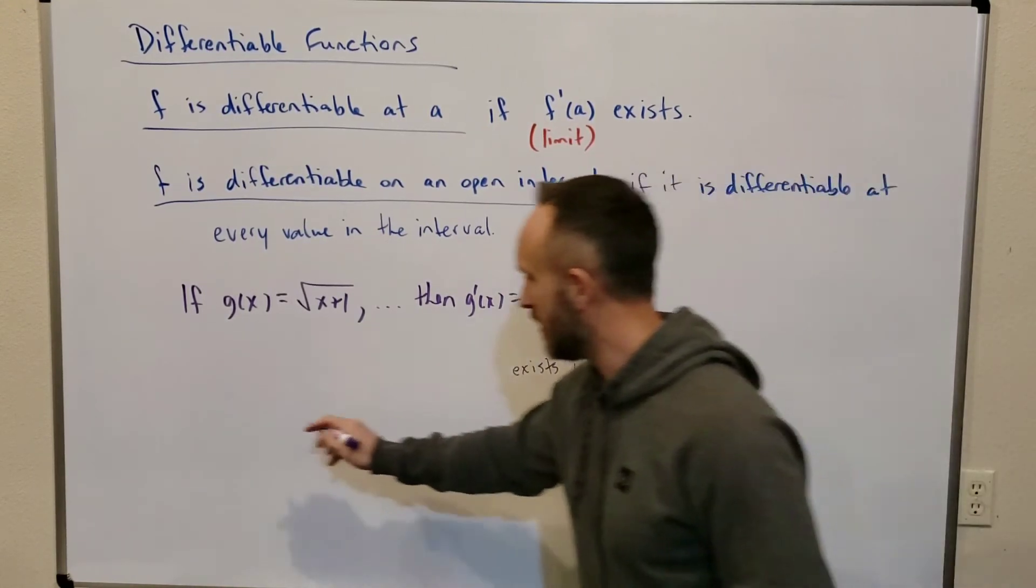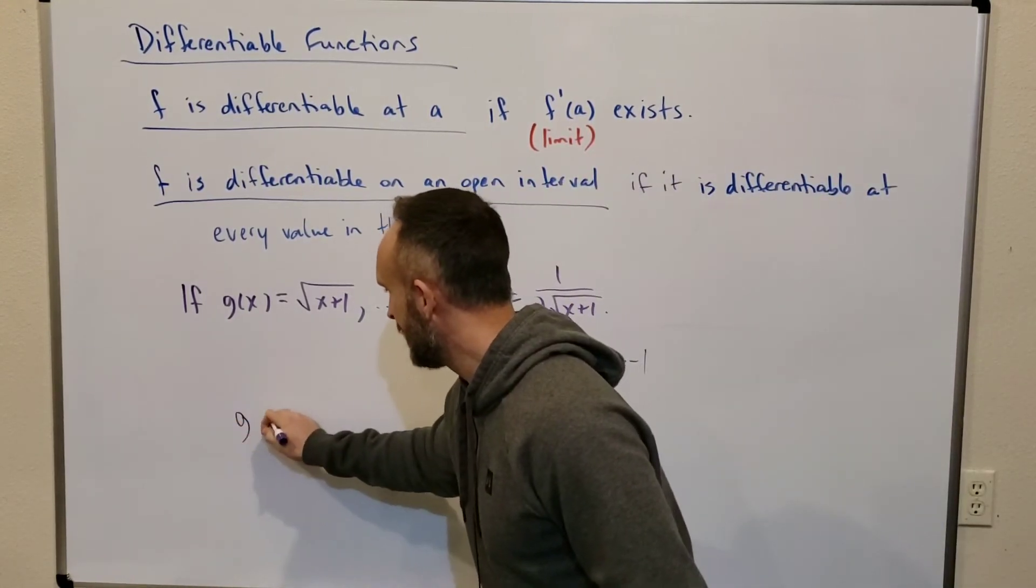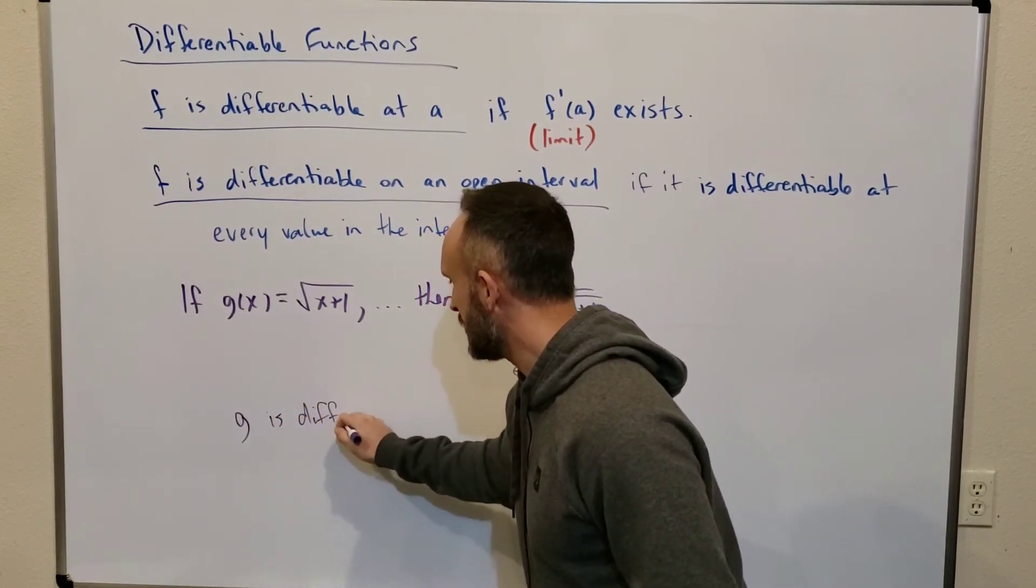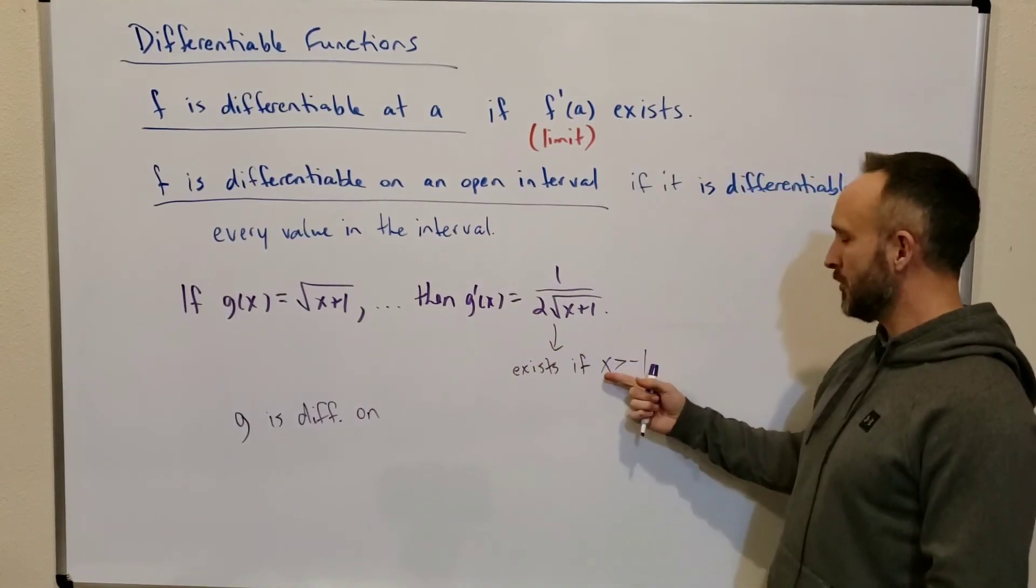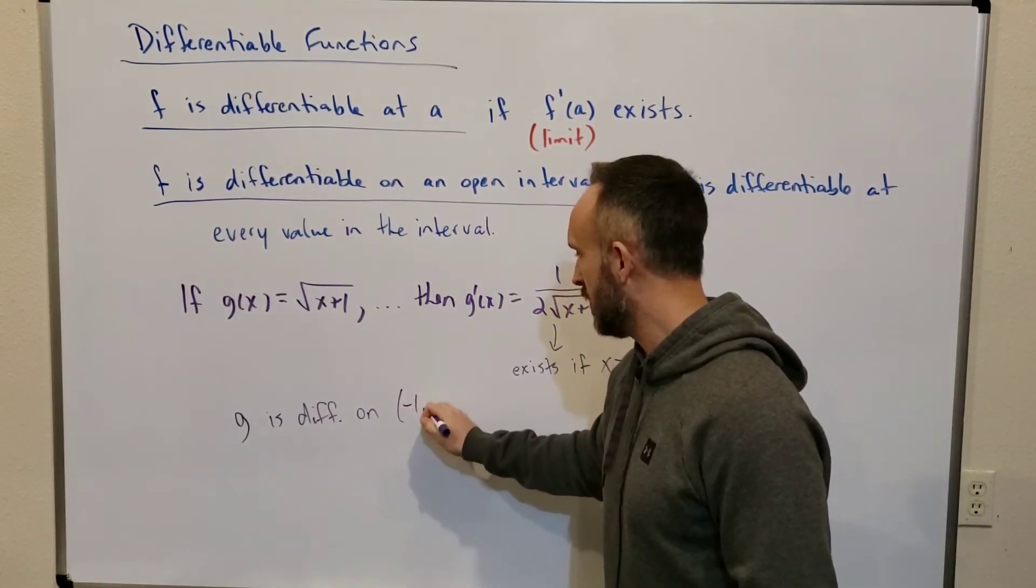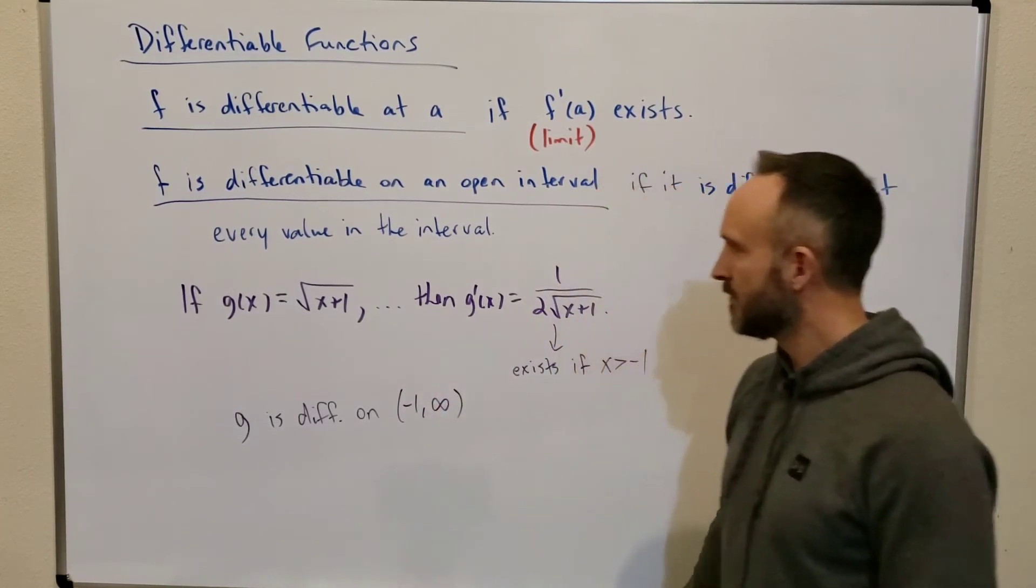So, we say here the function g is differentiable. Let's go right to the interval notation. The interval notation for everything bigger than negative 1 is parenthesis negative 1, comma, infinity.